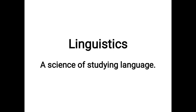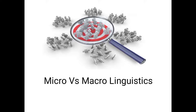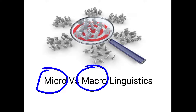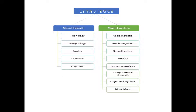Linguistics is the science of studying language, and it has different branches. The two main branches of linguistics are micro and macro. As you can see, these are the two main branches, and there are sub-branches of each. In micro linguistics, we study phonology, morphology, syntax, semantics, pragmatics, and so on.